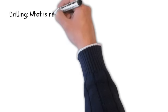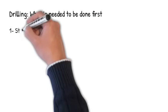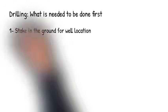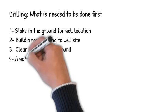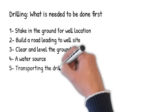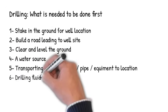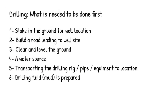Drilling. What is needed to be done in order to drill? First, put the stake in the ground for the well location. Second, build a road leading to the well site. Clear and level the ground, a water source, transporting the rig pipe equipment to location. Then drilling fluid mud is prepared.